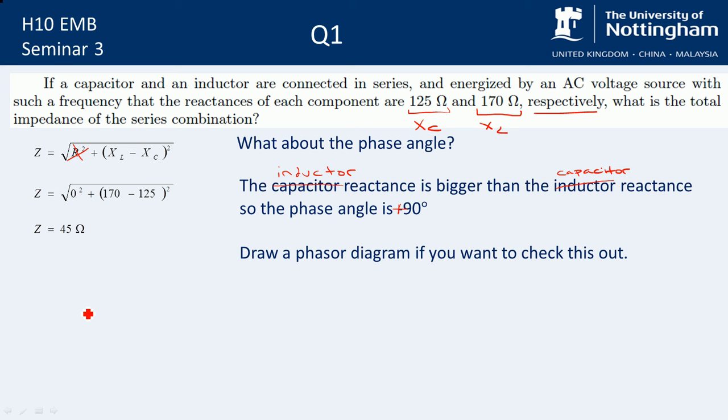So we can draw a phasor diagram if you want to check this out. We've got no resistance, which means that the phasor doesn't have any dimensions in the x direction. So let's draw XL and XC. XL is going to be 170 upwards—that's plus 170. Then from here we've got ZC, which is slightly smaller at minus 125. So we end up with a resultant phasor that is 45 at plus j, so it's at an angle of plus 90 degrees. That's all in ohms.